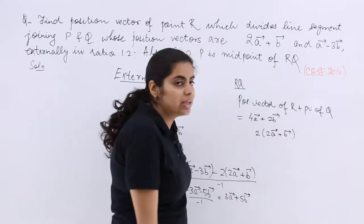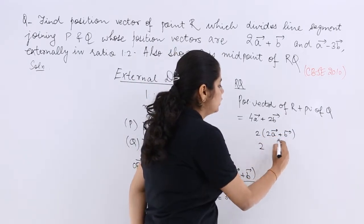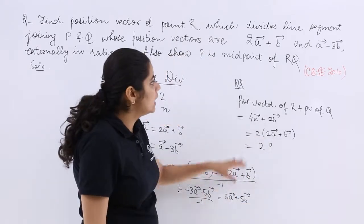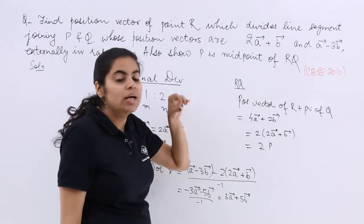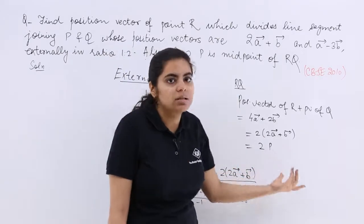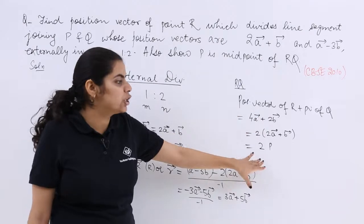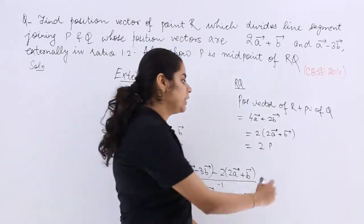Now you can establish a relationship that this is 2, this is regarding P. So definitely if I say that twice of P is RQ that means what? That means P is the midpoint because P is equal to RQ upon 2. So even that is also proved. So hence proved.